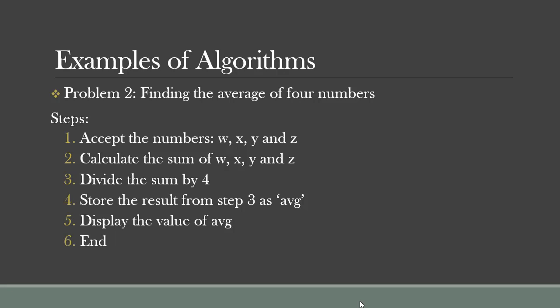The next step is storing the results you've gotten. After dividing the sum, you store the results as AVG, that's average. By using average, it would be used to store the result from step three in memory. Then step five is to display the value of the average. Of course, you know, in computing, if a problem is solved and if the user doesn't know that the problem has been solved, it doesn't make any difference.